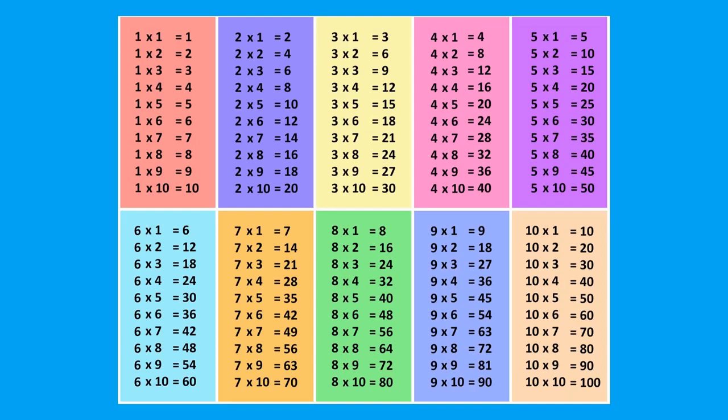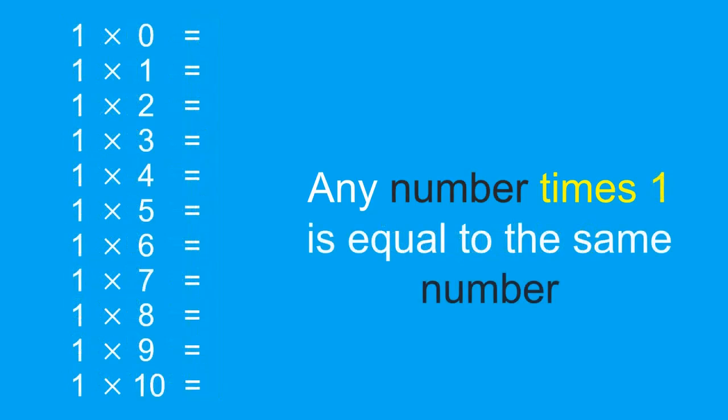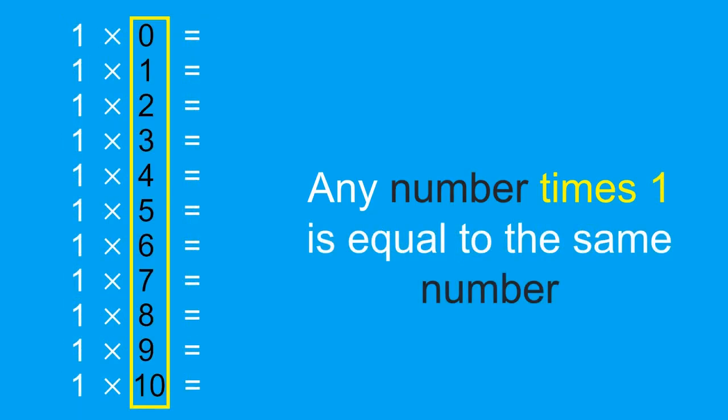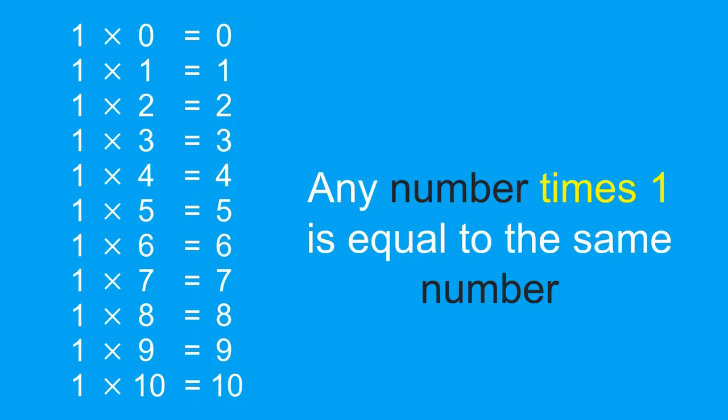We will learn about tricks to make memorizing easy. The first trick is that any number times zero will equal to zero. Next, any number times one is just the number itself.